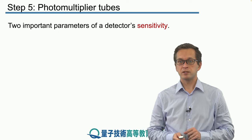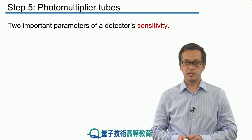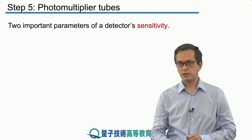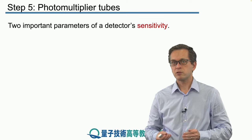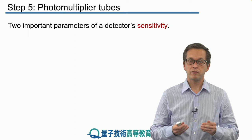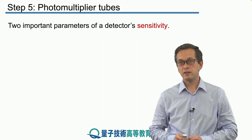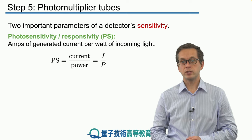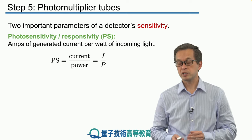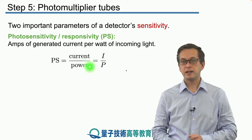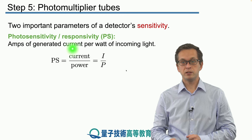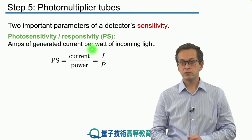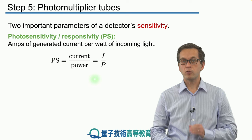So, what are the important parameters that tell us about the sensitivity of such a detector? After all, detecting single photons is not very easy. There are two important parameters that capture the sensitivity of a detector. One is known as the photosensitivity or responsivity, denoted PS. It's simply given by the number of amps of generated current per watt of incoming light — that is, PS equals current I divided by power P.